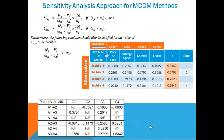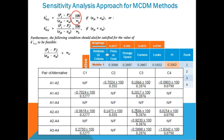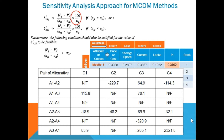Next, we calculate the delta-dash value — the percentage change in criteria weights required to change the ranking of the alternatives. We multiply each delta value by 100 and divide by the weight of the corresponding criteria. On solving, we get both positive and negative values.